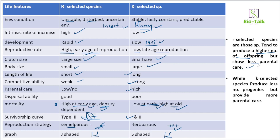In the case of K-selected species, they produce fewer offspring but provide high parental care. Offspring are larger and receive more resources from parents. In contrast, r-selected species produce large numbers of offspring with low parental investment. So the correct understanding is: r-selected = many offspring, low care; K-selected = few offspring, high care.